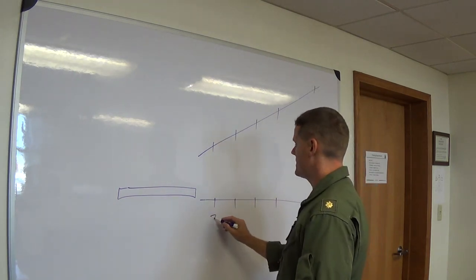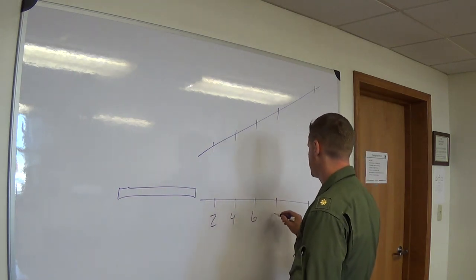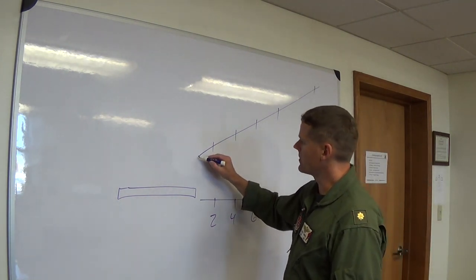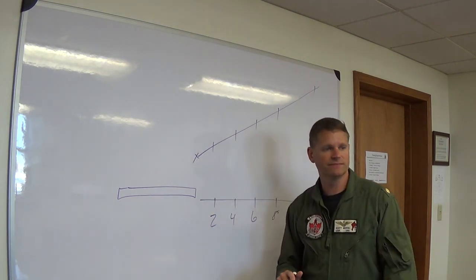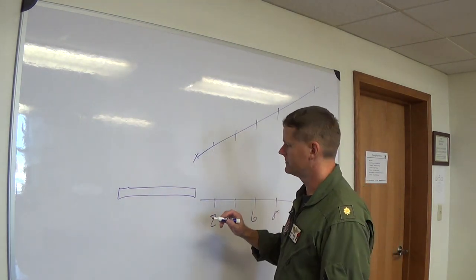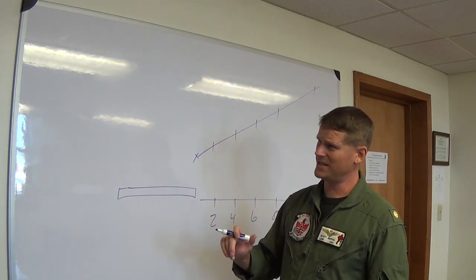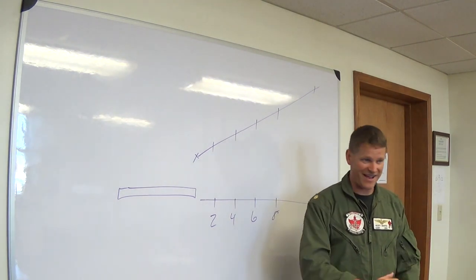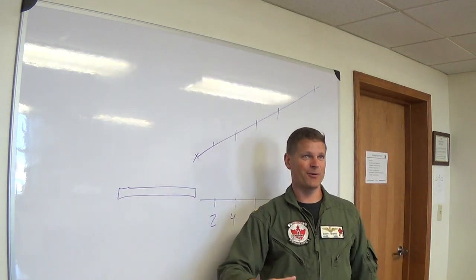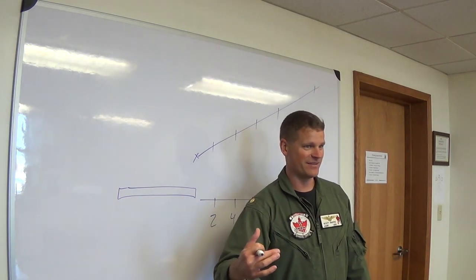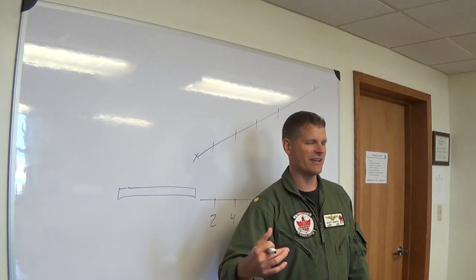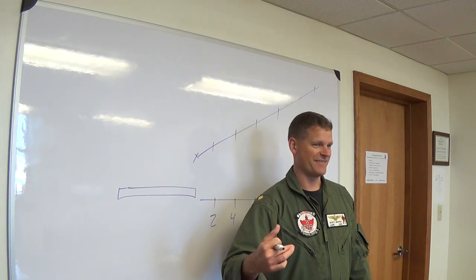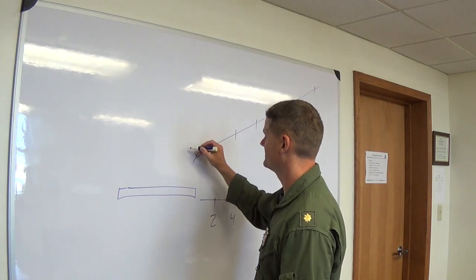Imagine here's two, four, six, eight, ten miles from the field. Going to Bruton today — what is my high key altitude at Bruton? High key AGL is 3,000 feet. Add field elevation — Bruton is 100 feet, Whiting is 200 feet — so Bruton high key is 3,100 feet MSL.